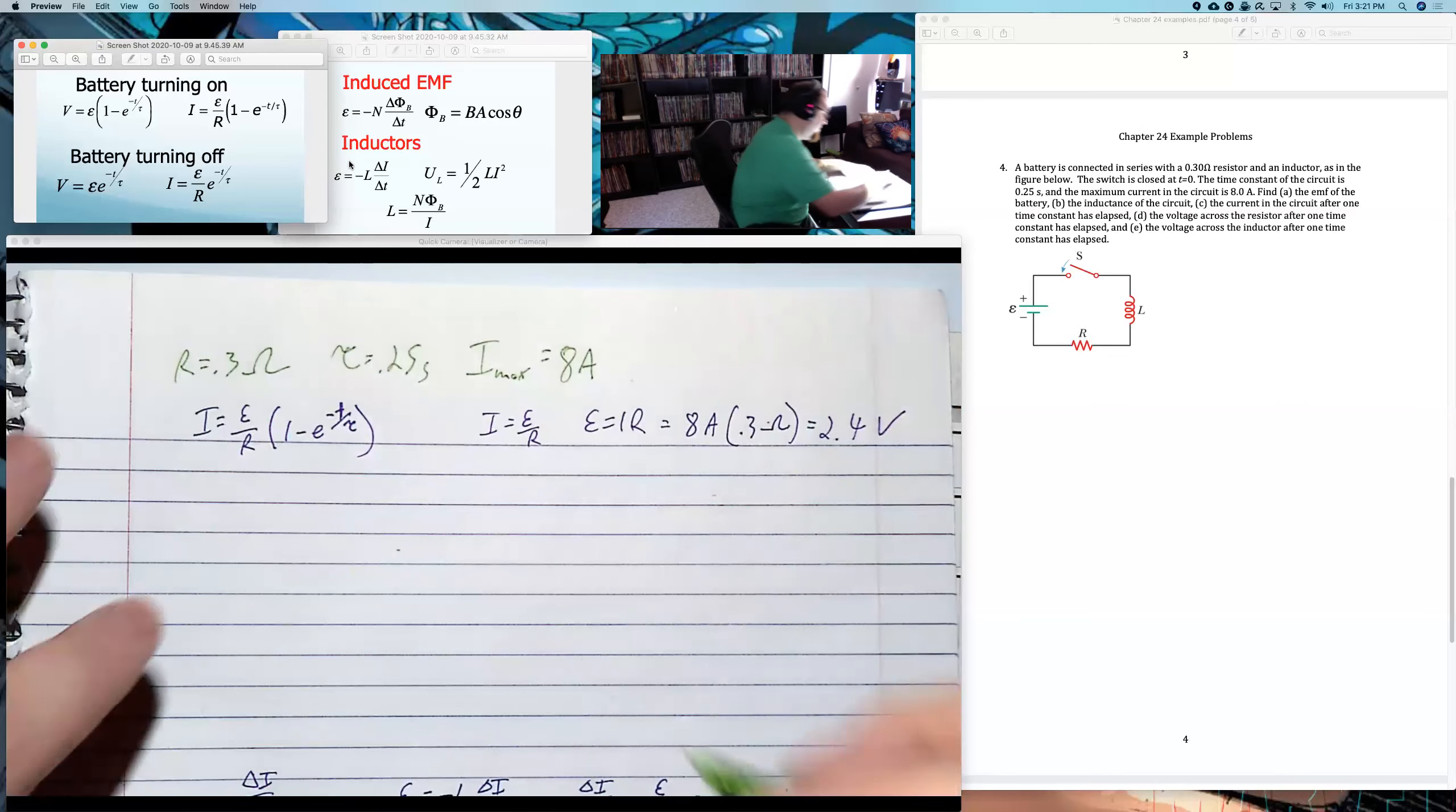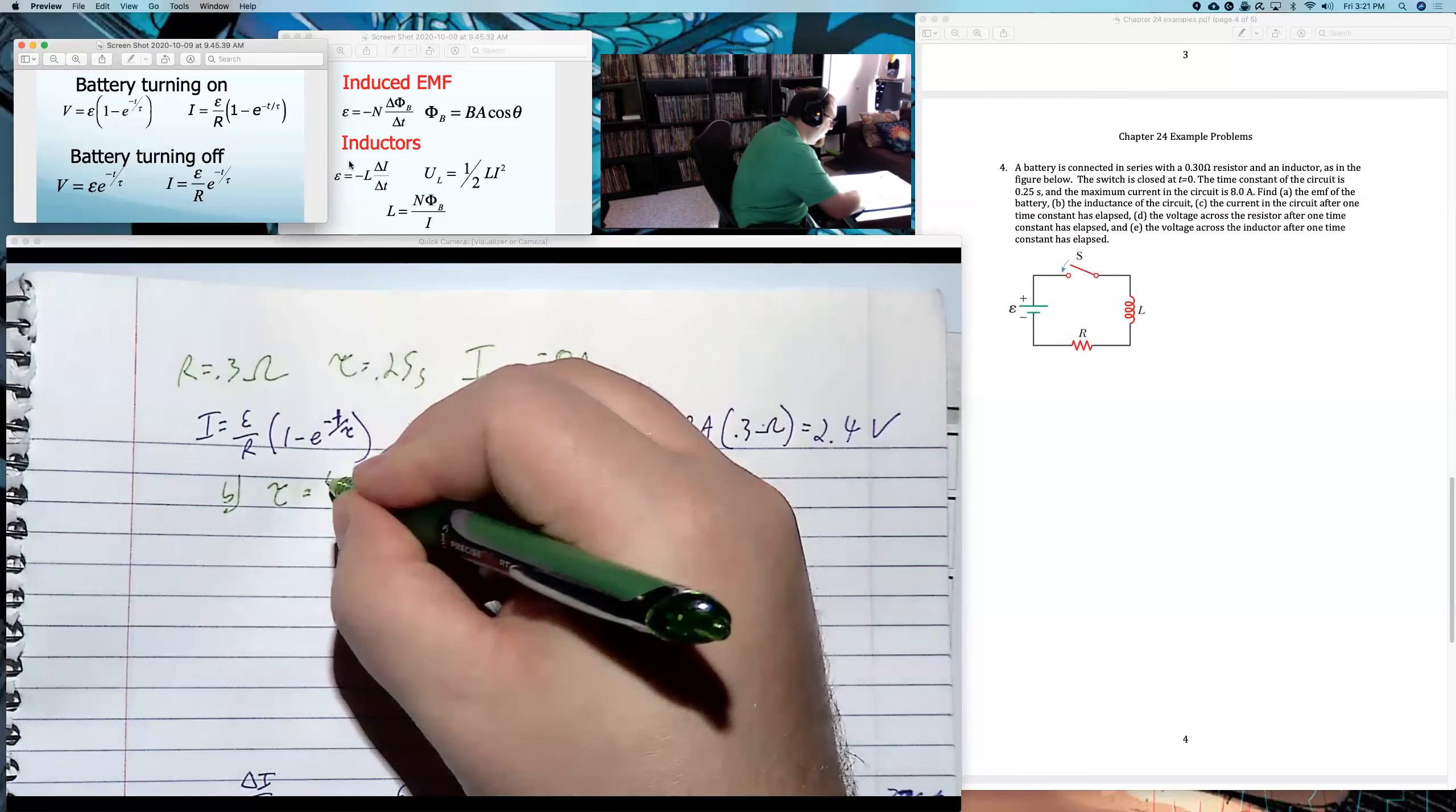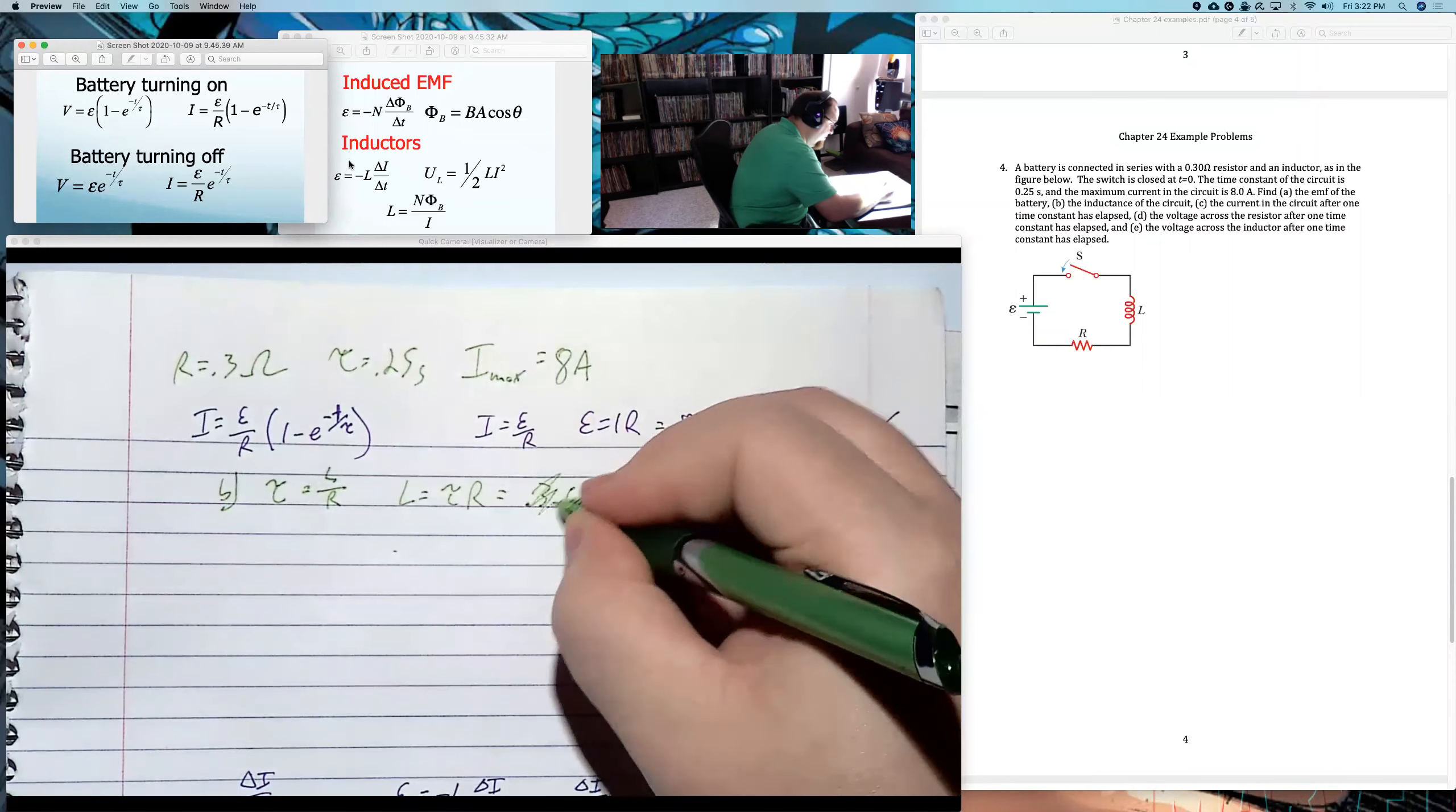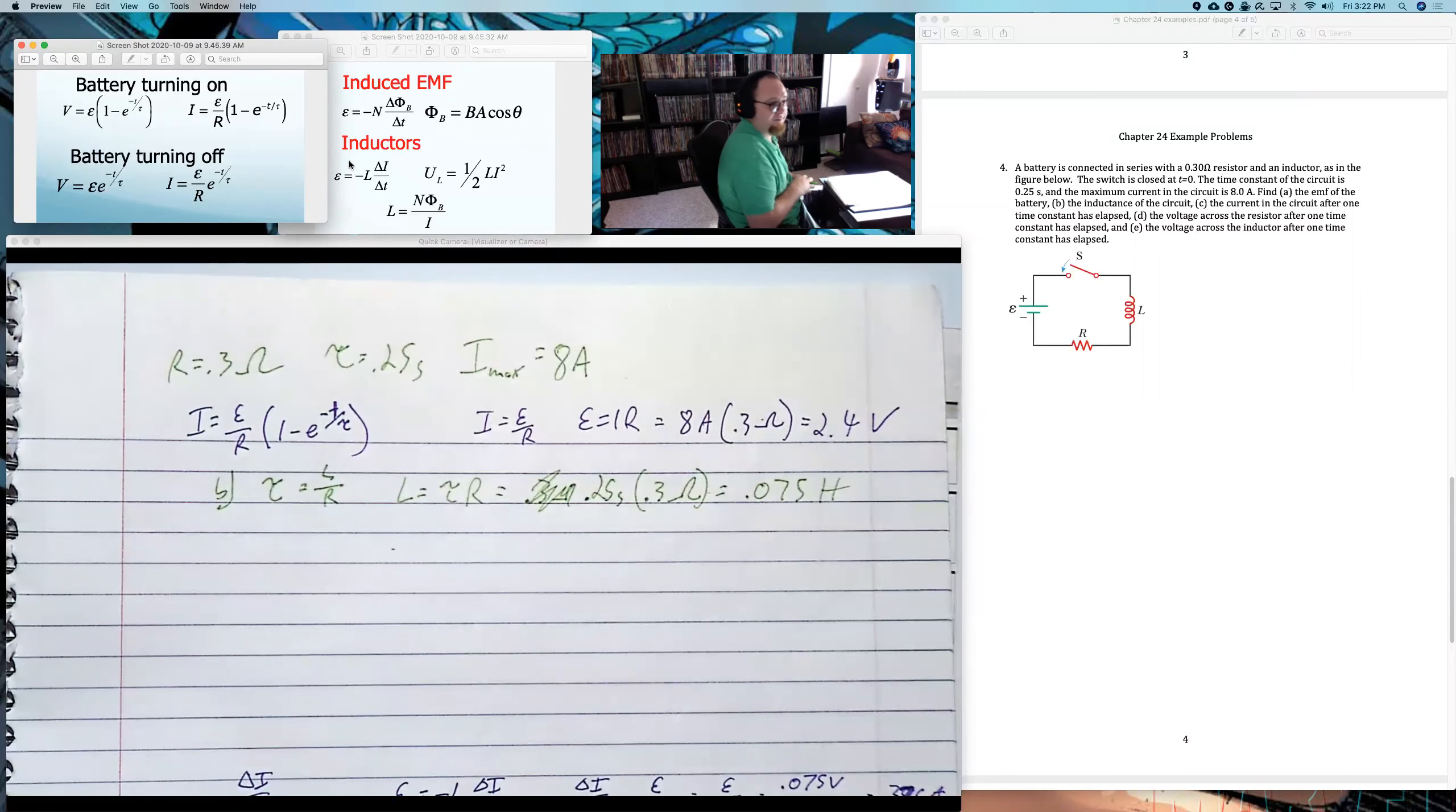Part B, the inductance of the circuit. Now, there's a bunch of ways we could try to find it, but the easiest one is they gave tau and they gave R. And this isn't actually written on my thing in the upper corner, I should add that. But the time constant of an LC circuit, or LR circuit, I misspoke, is inductance over R. And therefore the inductance is the time constant times the resistance. Or 0.3, oh, I went out of order, 0.25 seconds times 0.3 ohms. And a quarter of 0.3 is 0.075 Henry's.